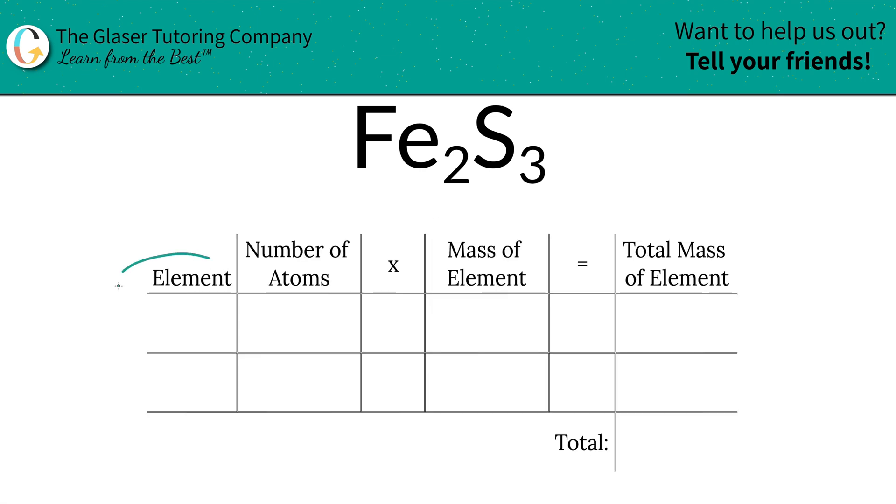Watch how quick and easy this is. So the first thing is we're going to write down the elements we see in the compound. So we have iron and we have sulfur.